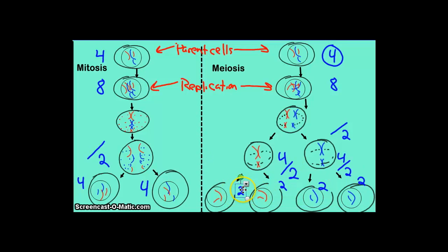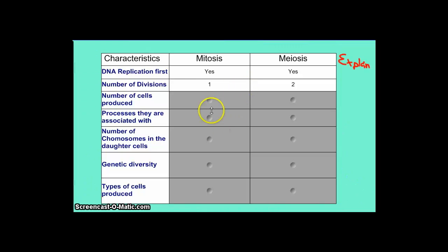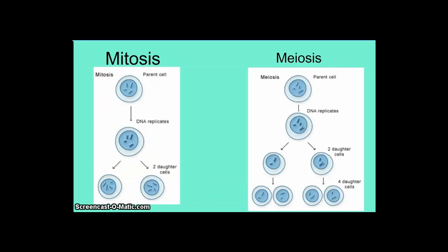Number of cells produced: mitosis creates two cells, meiosis creates four. Looking at the generic diagrams — in mitosis you take one cell, divide it once, and make two cells. In meiosis you take one cell, divide it once to get two, then divide those two cells again, ending up with four cells.